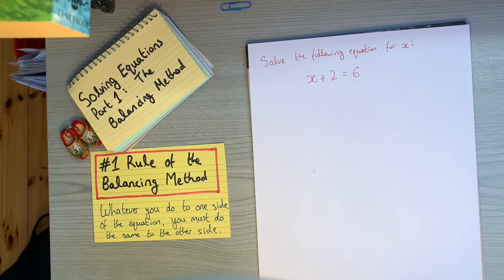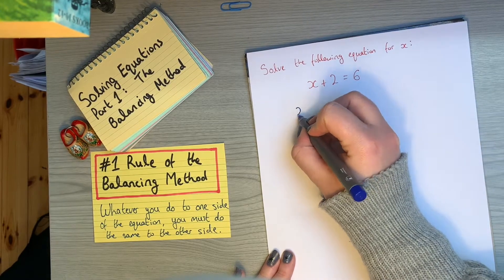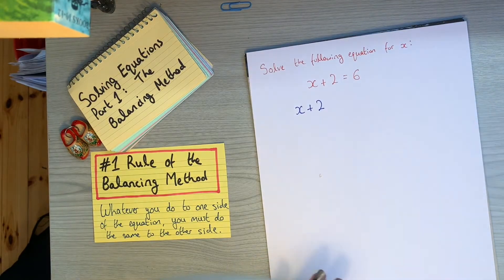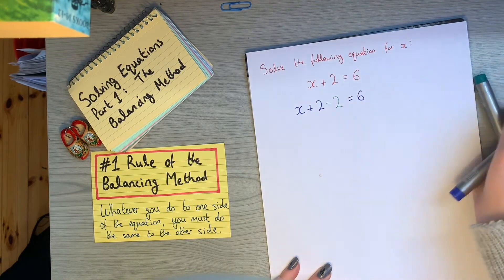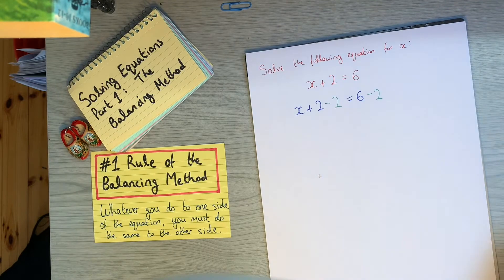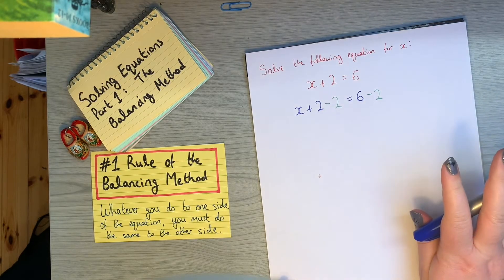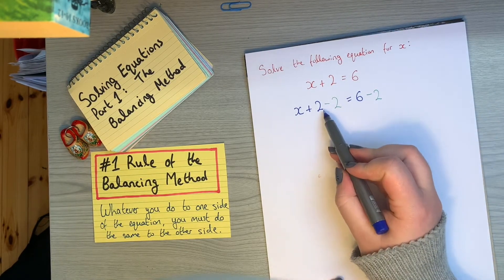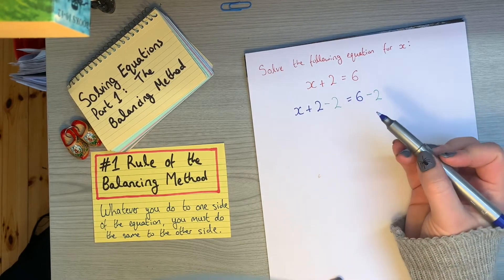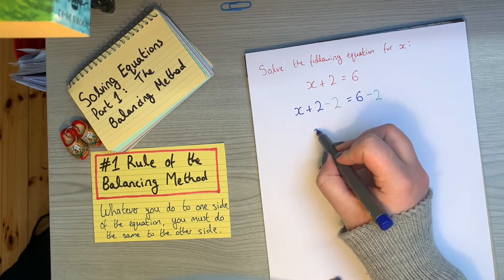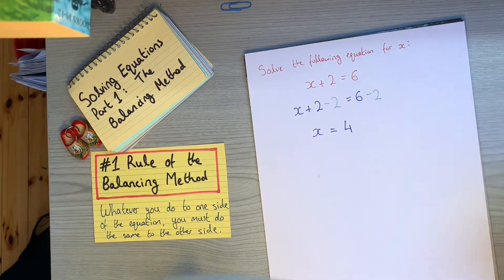The whole point is to get x by itself, or to isolate x. So with this equation, what I'm going to do is take 2 from both sides. So we'll say x plus 2 minus 2 is equal to 6 minus 2. I've taken 2 from both sides, so the equation is still balanced. The plus 2 and minus 2 cancel out, leaving just x on this side, and 6 minus 2 equals 4 on the other — which is exactly what we predicted at the start.